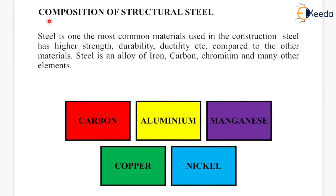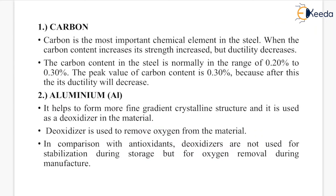Now the composition of structural steel. Steel is one of the most common materials used in construction. Steel has higher strength, durability, and ductility compared to other materials. Steel is an alloy of iron, carbon, chromium, and many other elements.